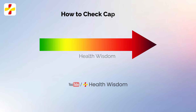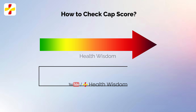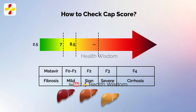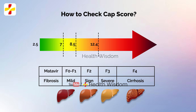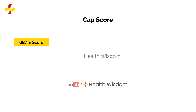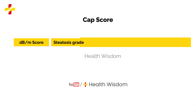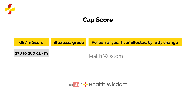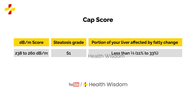How to check CAP score: the following table shows ranges of CAP scores and the matching steatosis grades, indicating how much of your liver is affected by fat buildup. The table lists: decibel per meter score, steatosis grade, and portion of liver affected by fatty change. Score 238 to 260 dB/m: S1, less than one third, meaning 11% to 33%.